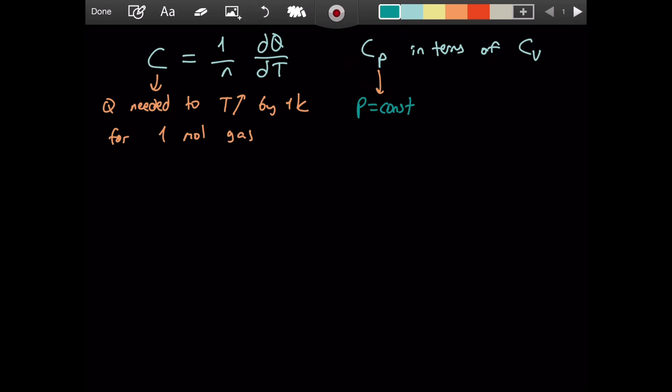And for Cv, you might already guess it, this is for constant volume, so V is constant. Its definition is that Cv is the amount of heat required to increase the temperature of a gas by one kelvin and the mole number is one mole, and during this process, the volume is constant. I hope I'm not confusing this, because this is very simple if you really think about it.